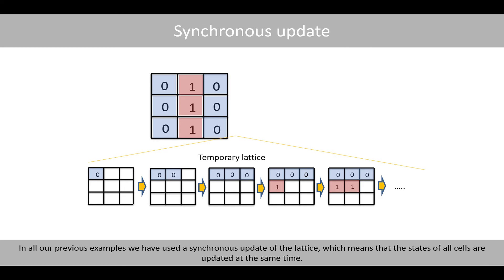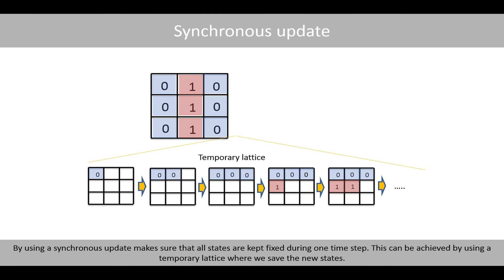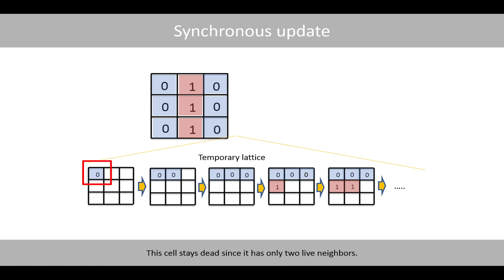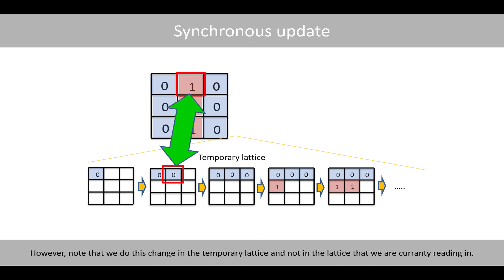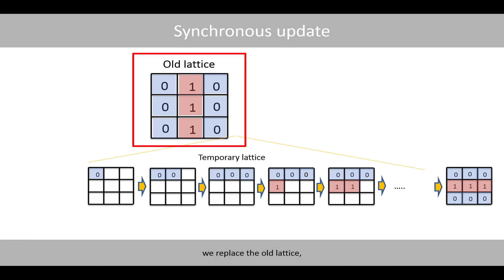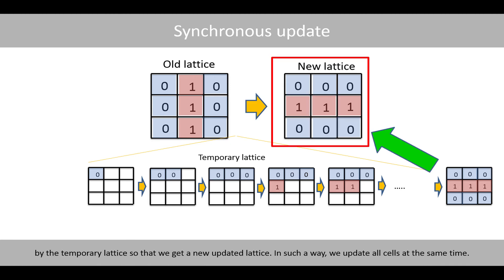In all our previous examples we have used a synchronous update of the lattice, which means that the states of all cells are updated at the same time. By using a synchronous update, we make sure that all states are kept fixed during one time step. This can be achieved by using a temporary lattice where we save the new states. For example, if we update the following lattice according to the rules in the Game of Life model and use real edges as boundaries, the top left cell has three neighbors. This cell stays dead since it only has two live neighbors. This cell dies since it has only one live neighbor. However, note that we do this change in the temporary lattice and not in the lattice that we are currently reading in. Once we have updated all cells of the temporary lattice, we replace the old lattice by the temporary lattice so that we get a new updated lattice.